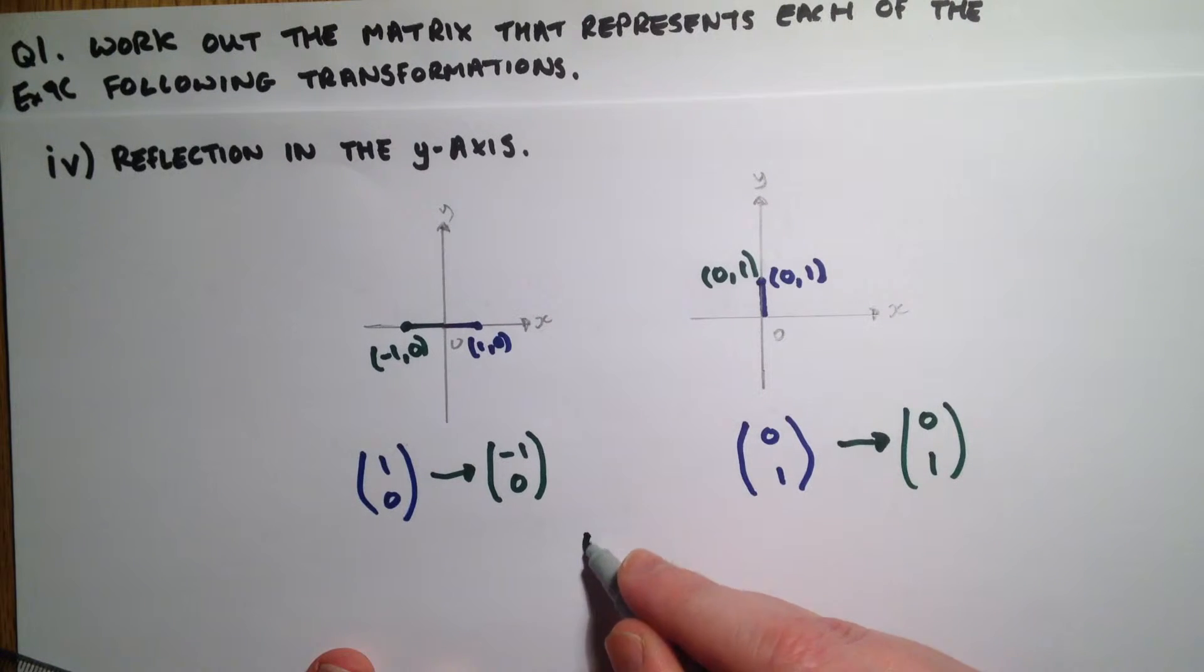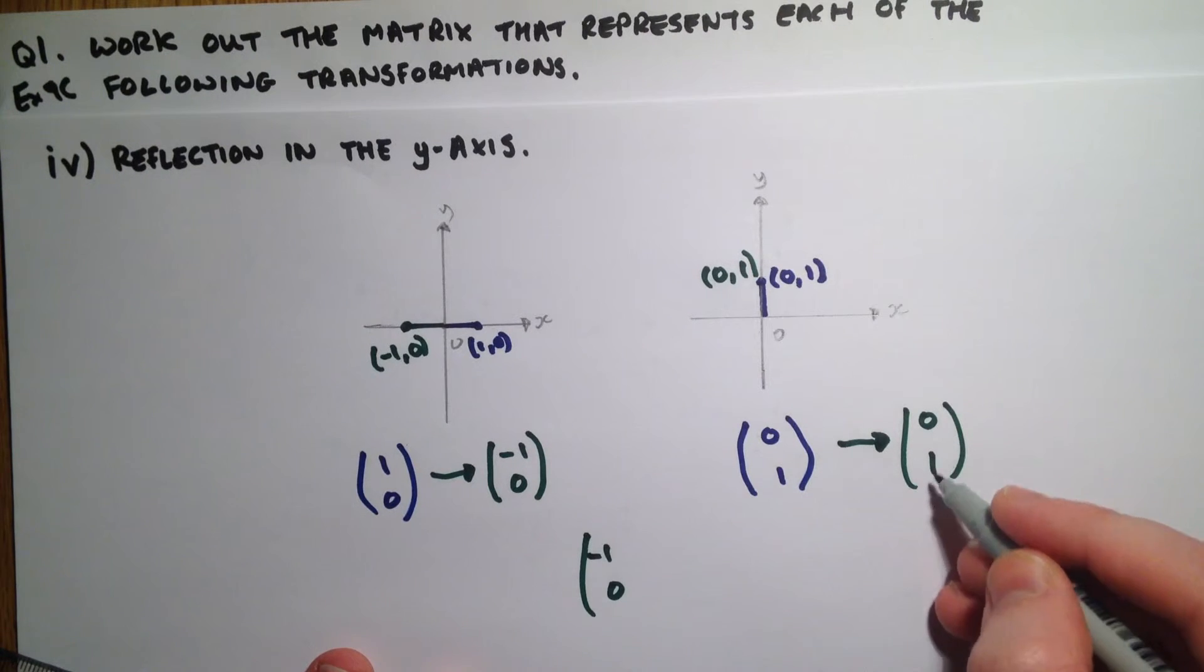So the matrix then is going to be one zero, I apologize, negative one zero, that's from here, and this one here zero one.